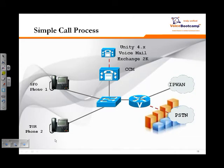When a phone is registered to call manager, one of the things you have to understand is how the phone communicates and who is basically in control at what point. Here's an example of two phones: Phone 1 in San Francisco and Phone 2 in Toronto, both registered to the same call manager. Even though they register to the same call manager, they will dial each other using four digits. But how do they communicate and what are the dependencies?